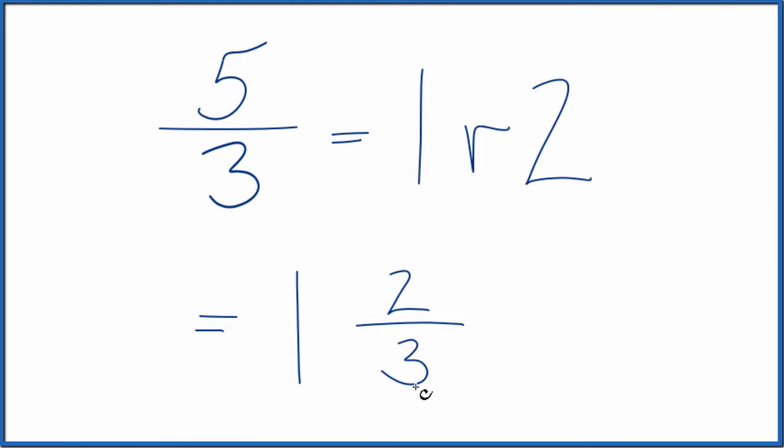You can check that. 1 times 3, that's 3, plus 2, that equals 5. We bring the denominator across, 5 thirds, which is what we started with.